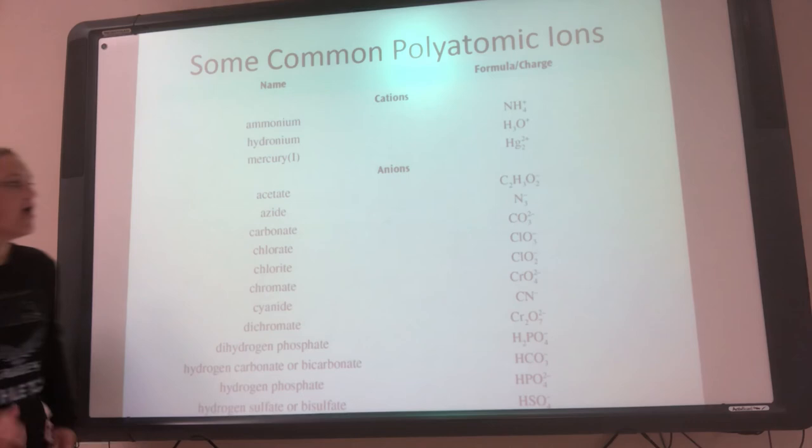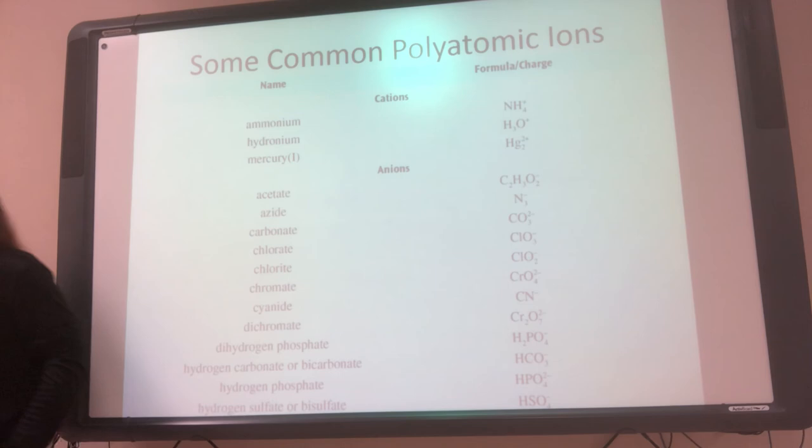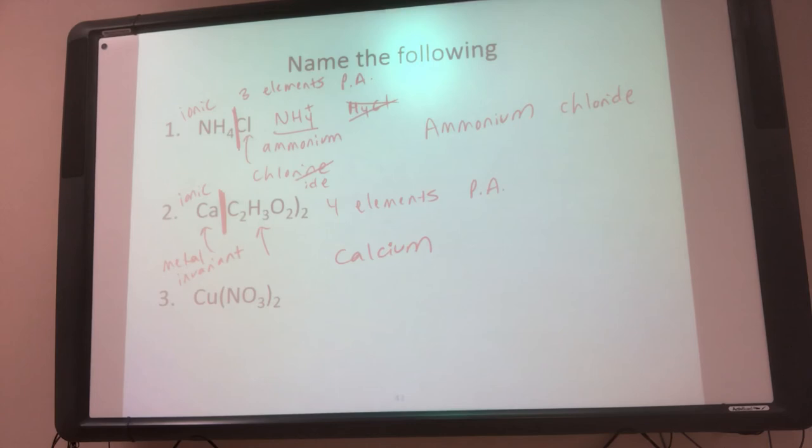I find the polyatomic ion on the chart: it has two C's, three H's, and O's, with a negative charge. Its name is acetate. So C2H3O2 is acetate. To name this compound: the cation is calcium — no Roman numerals needed since it's invariant — and the anion is acetate. So the name is calcium acetate.